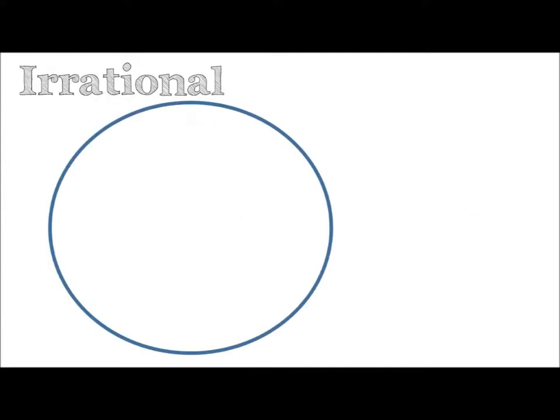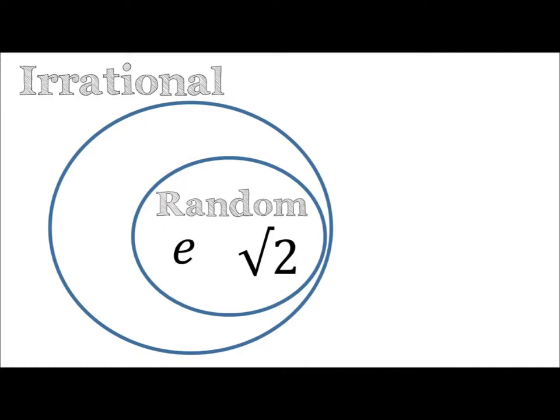So we need irrational random numbers and there are a few, but none of them hold that special place in our heart like Pi.